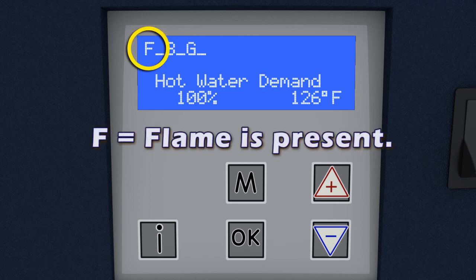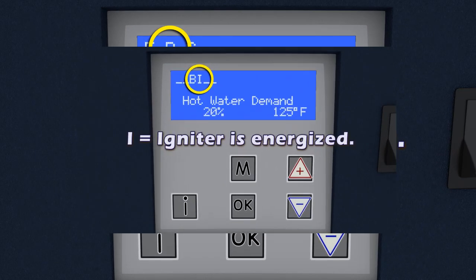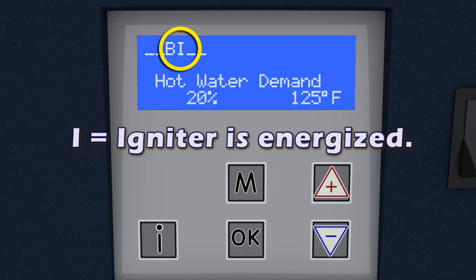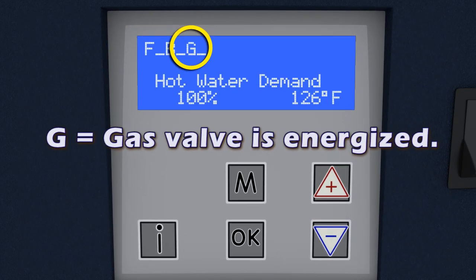F means a flame is present. B indicates the blower is running. I is shown when the igniter is energized. And G means the gas valve is energized.